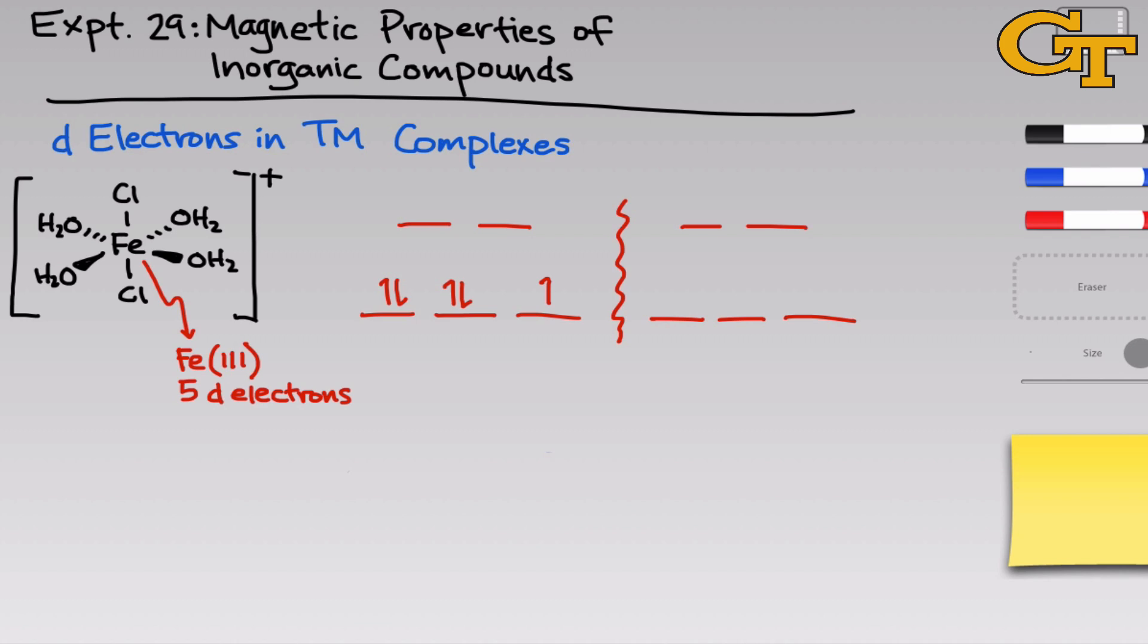There's another way to imagine filling up these levels. When the gap between the two sets of levels is small enough, it might actually take more energy to pair up an electron in one of the lower energy levels than it takes just to throw an unpaired electron into one of the higher energy levels. So we can also fill these levels by adding one unpaired electron to each level.